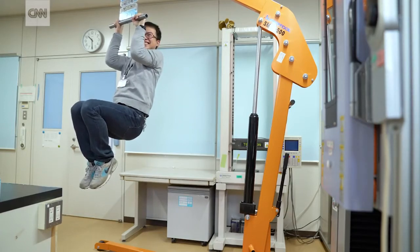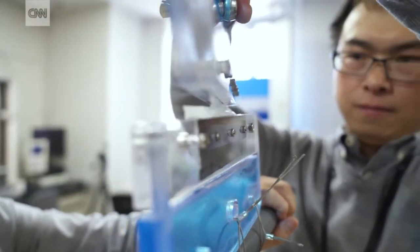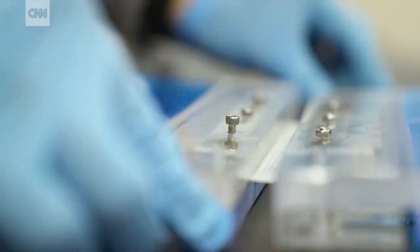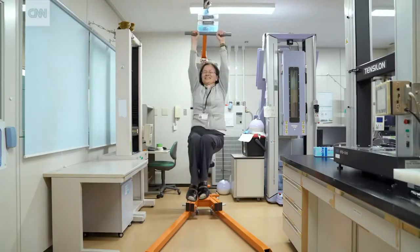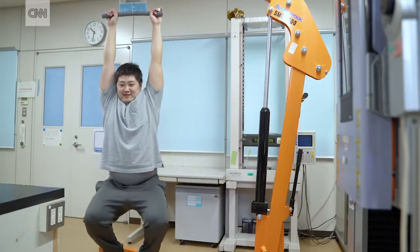This might be the future of joint replacements. No, not him. This. The white stuff between the two clamps. It's a brand new super material that won't tear when he, or her, or this guy, or even this guy, gives it all they've got.